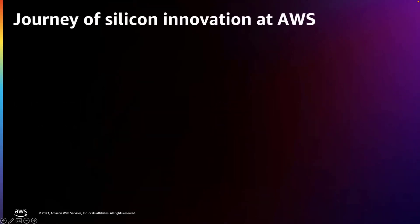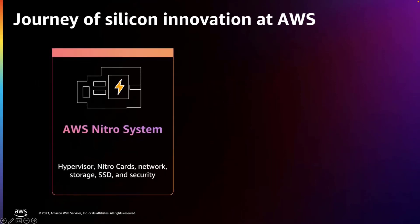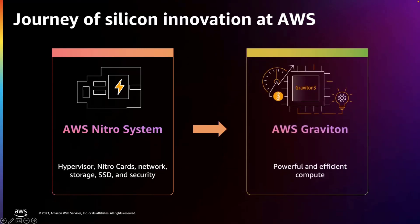Let's talk about the journey of silicon innovation at AWS. With the AWS Nitro system, we've moved functionality away from the traditional hypervisor and into a purpose-built chip. This improves I/O performance, it frees up host CPU cycles, and it raises the security bar of our servers. The Graviton processor is a custom CPU that delivers the best price performance and energy efficiency for a wide range of cloud workloads, and it's built on top of and next to the Nitro system. They work hand-in-hand to deliver the most powerful and efficient compute available in the cloud.